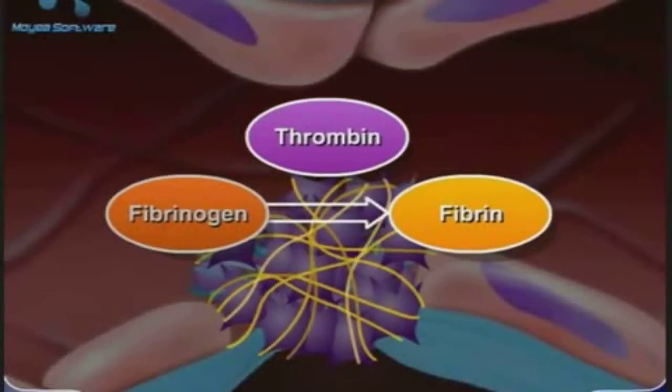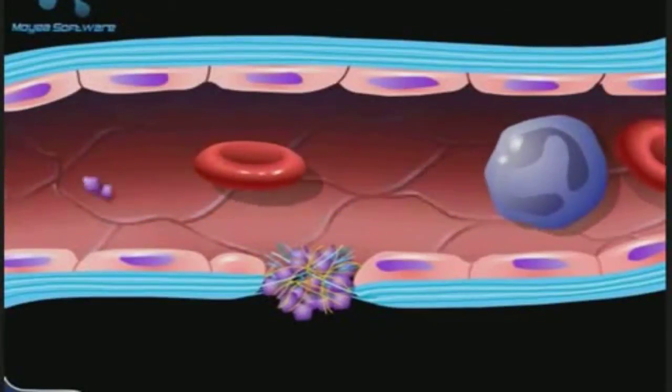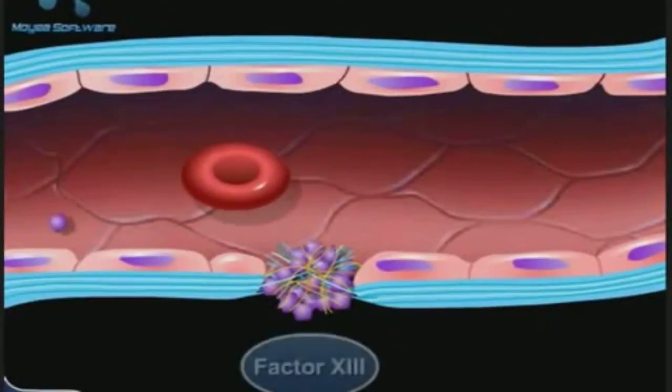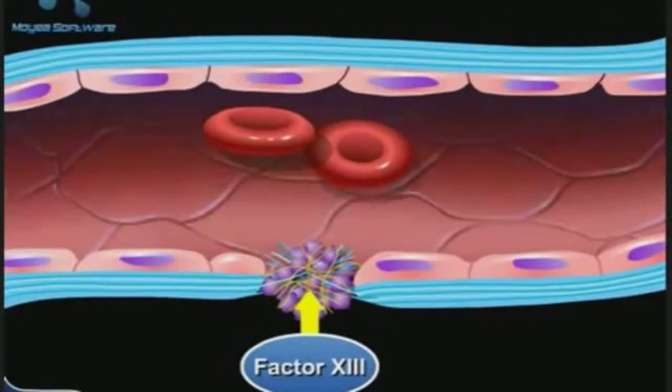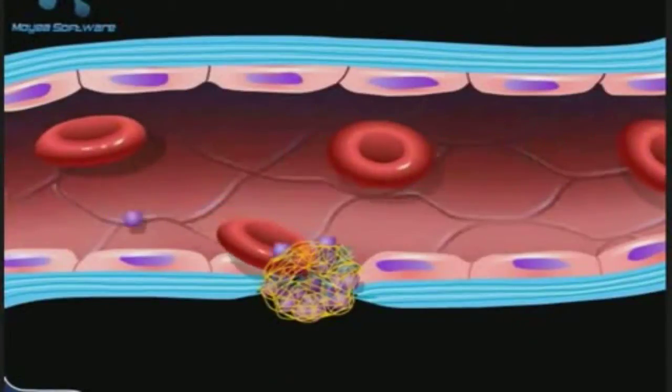Thrombin converts fibrinogen to fibrin. Fibrin initially forms a loose mesh, but then factor 13 causes the formation of covalent crosslinks, which convert fibrin to a dense aggregation of fibers.